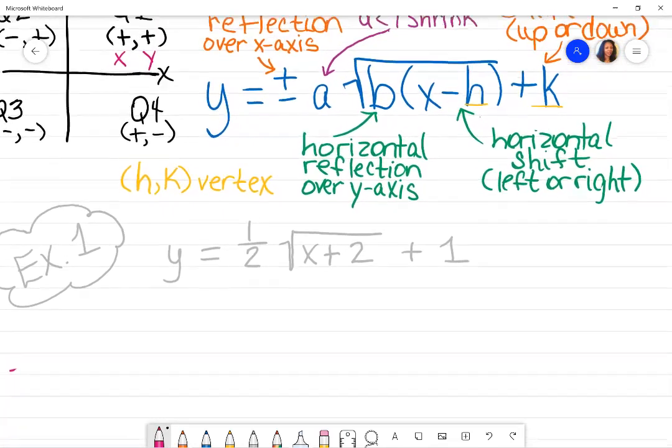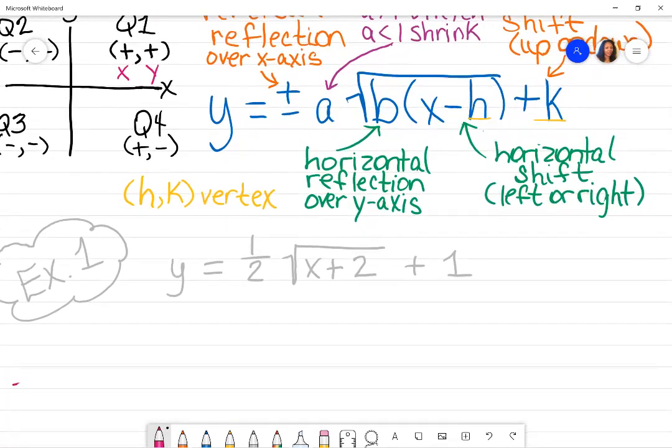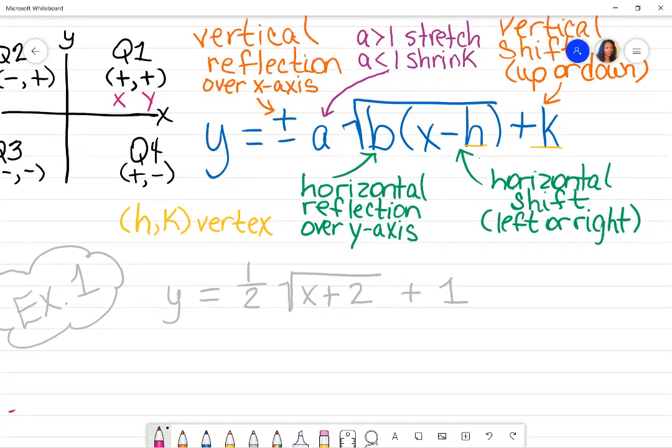For example one, what you want to do is see what represents what. In front of your radical, you have either a positive or negative sign and a number possibly. That's represented by anything that's vertical. Outside of the radical are your Y values, and Y means up and down, and another word for up and down is vertical.